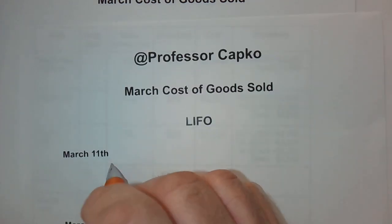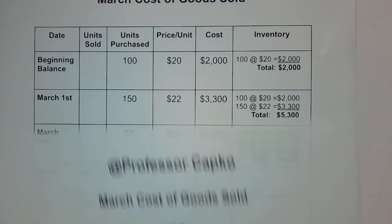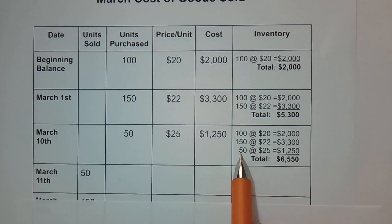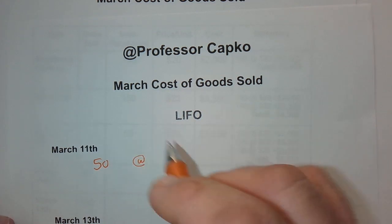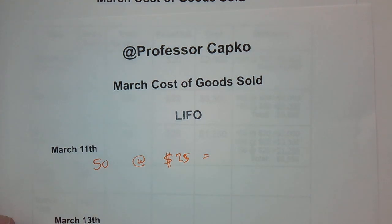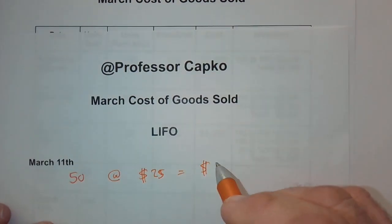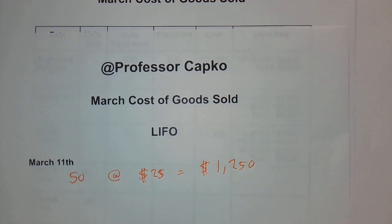Under LIFO — last in, first out — we sell the most recently purchased units first. On March 11th we sell 50 units, and the last units purchased were 50 units at $25 per unit. We sell all 50 of them, making our cost of goods sold for that first sale $1,250.